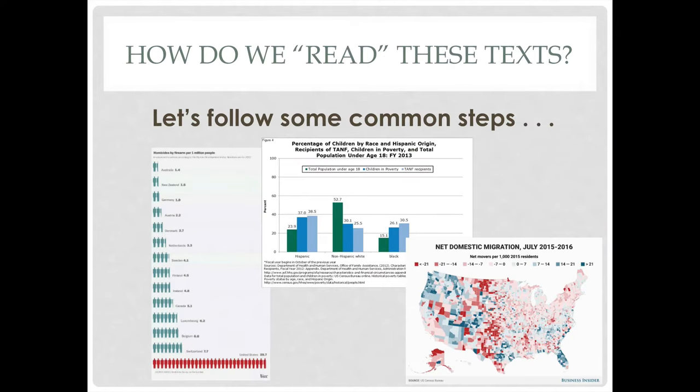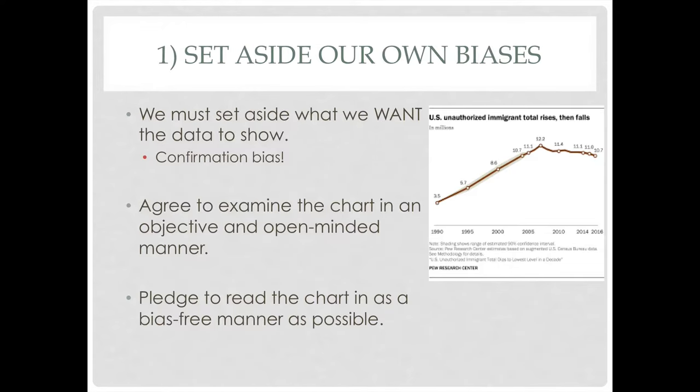So how do we read these texts? Here are some steps we've come up with as instructors. They may not be the perfect steps to take, but if you come across a chart, map, table, etc. and apply these steps, you'll have a good handle on how to read them, how to learn from them, and how they can be used for further investigation. The first step — and this goes with reading pretty much anything — is that we have to set aside our own biases. We have to set aside what we may want data to show, and read the text for what it does show.